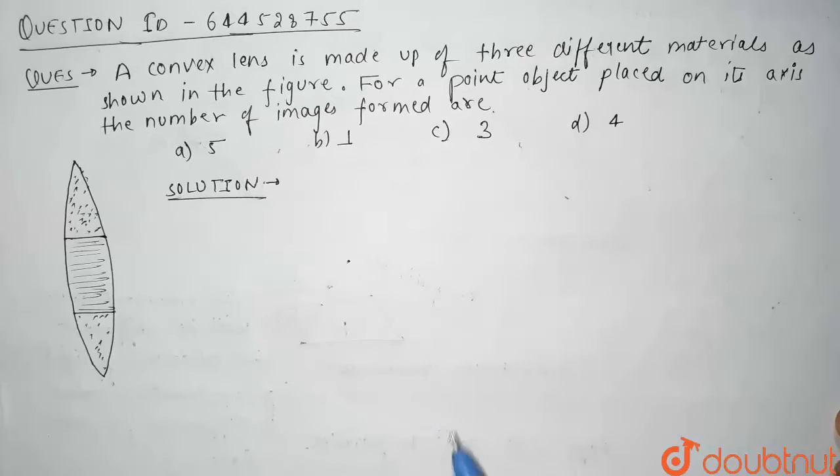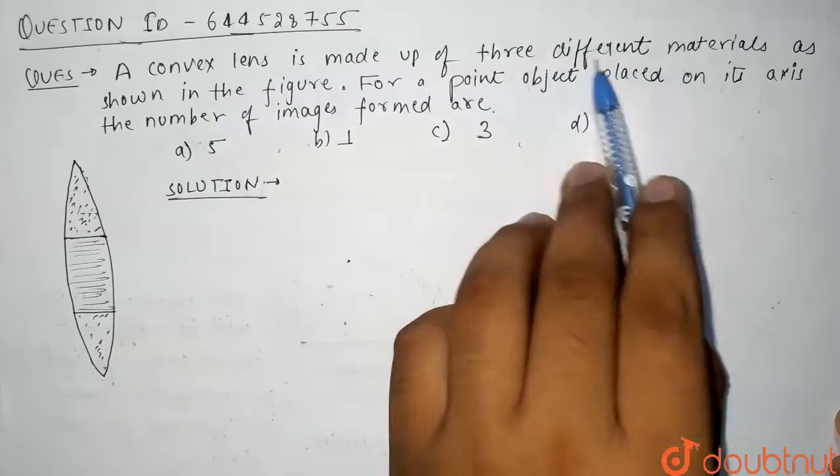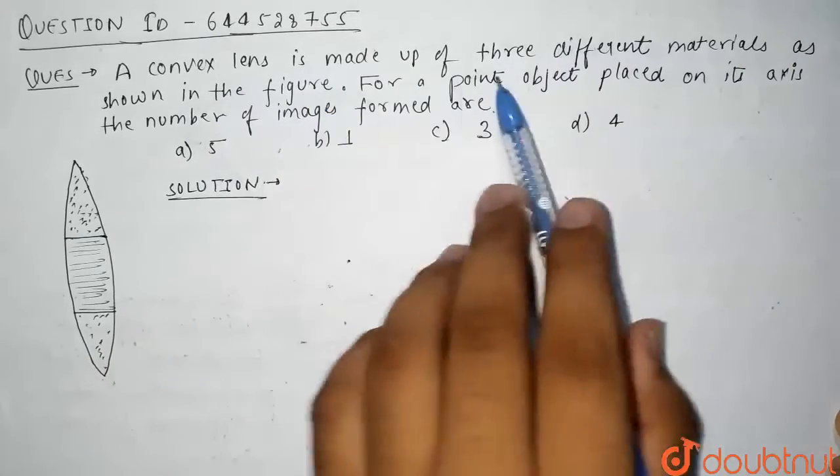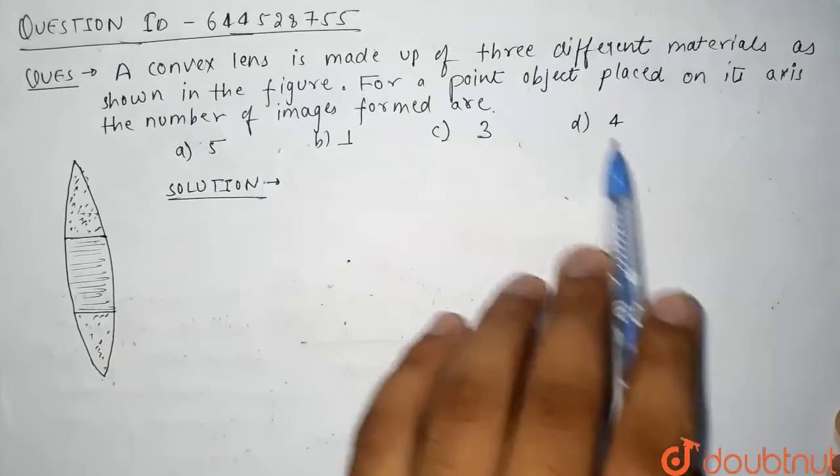Hello guys, so today's question is: a convex lens is made up of three different materials as shown in figure. For a point object placed on its axis, the number of images formed there.